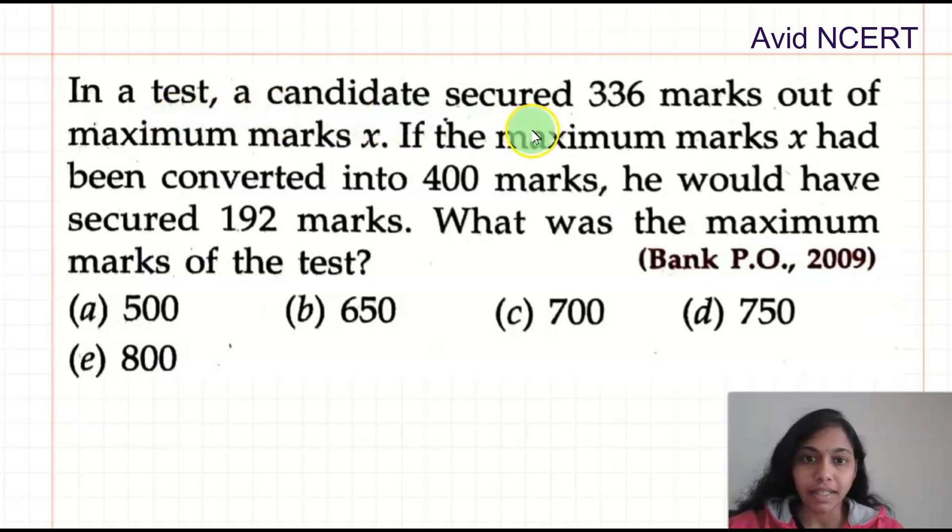In a test, a candidate secured 336 marks out of maximum marks x. If the maximum marks x had been converted into 400 marks, he would have secured 192 marks. What was the maximum mark of the test?